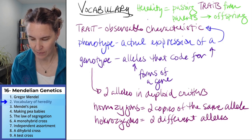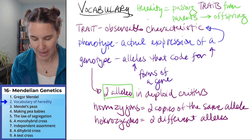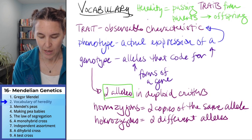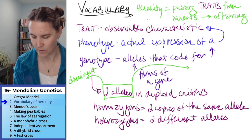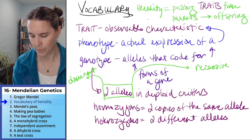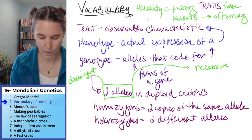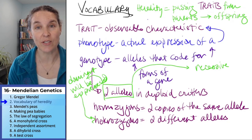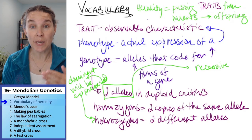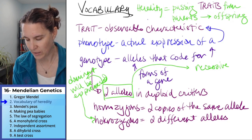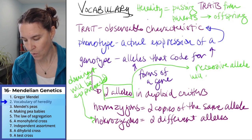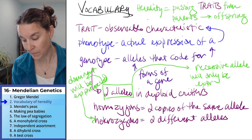We can have different alleles, and there are a couple of words for this. Alleles can be dominant or recessive. A dominant allele will be expressed even in a heterozygous genotype — if that dominant allele is present, it will be expressed even if there's only one copy of it. A recessive allele will only be expressed if there are two copies of it.